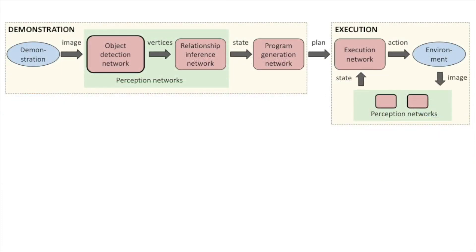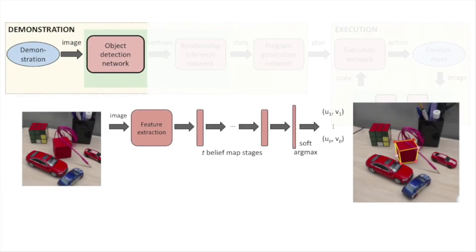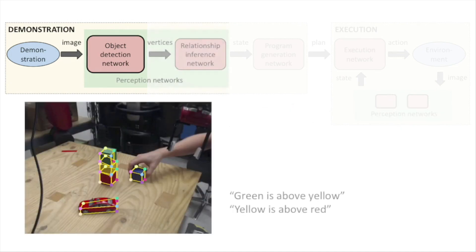The object detection network perceives the poses of objects. Built from a convolutional neural network, it predicts the locations of object vertices in image space.